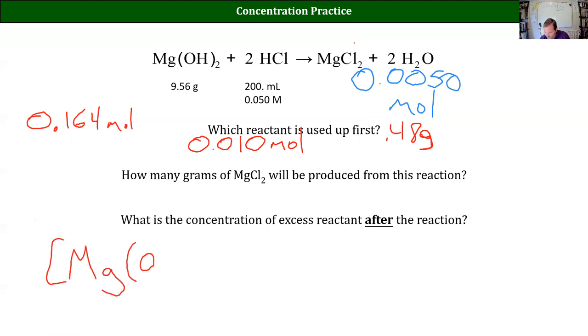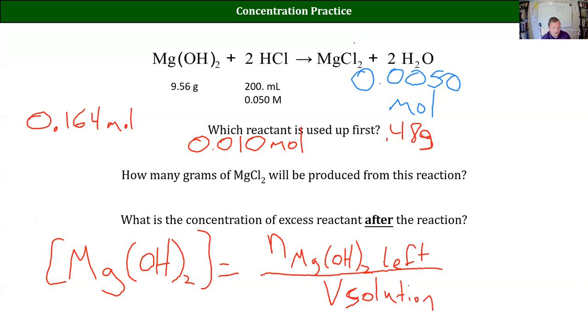Our concentration of Mg(OH)2 after the reaction is going to be moles Mg(OH)2 left divided by the volume of the solution. Right? Because that's how we did our molarities, right? It's always just find how many moles you have. Find out what your volume is.